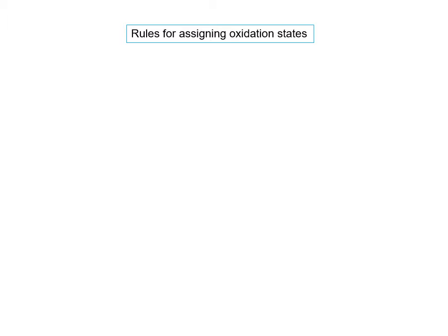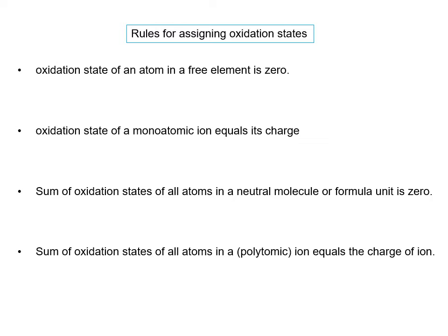Now we're going to look at rules for assigning oxidation state. The first rule is that the oxidation state of an atom in a free element is zero. A free element is just an element that occurs by itself and is not in a compound. For example, sodium has an oxidation state of zero — there's no charge shown and the sodium is all by itself. Cl2 is a free element because it's not a compound, so the oxidation state of each chlorine in Cl2 is zero.